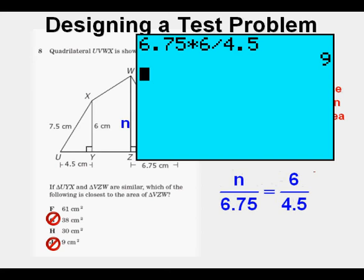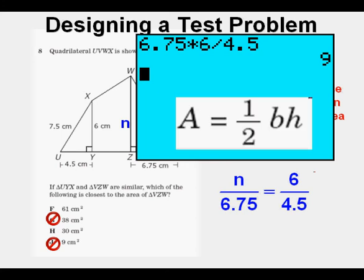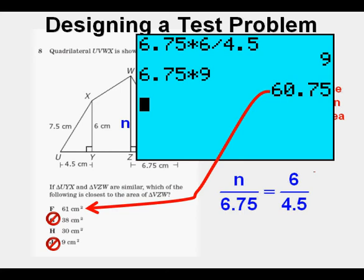For our last likely incorrect answer, let's say that we got the right proportion set up and got 9 for N or the height as before. Now let's say we use that formula 0.5 base times height and forget to divide by 2. We get 60.75 which is closest to answer choice A. But I already gave it away. This one's wrong because we forgot to follow the formula for the area of a triangle which is dividing the base times the height by 2.